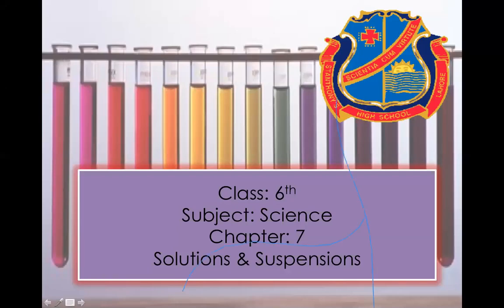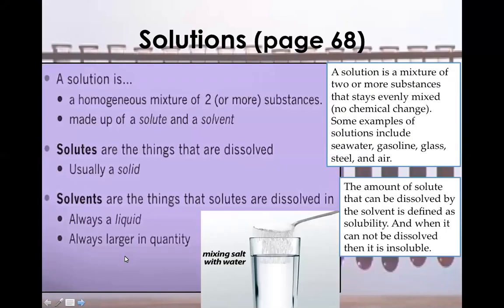We are revisiting concepts from the previous class about solutions, solvents, and solutes. A solution is something made from the combination of two or more substances — it is a homogeneous mixture that is evenly distributed. Examples include sea water, gasoline, glass, steel, and air. It is made up of two things: solute and solvent.